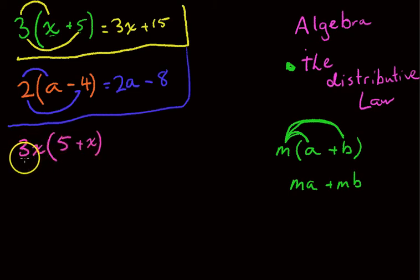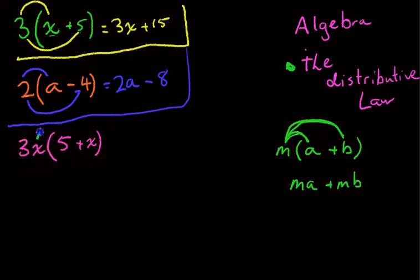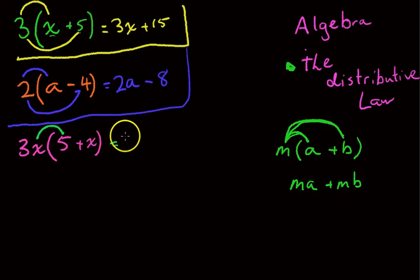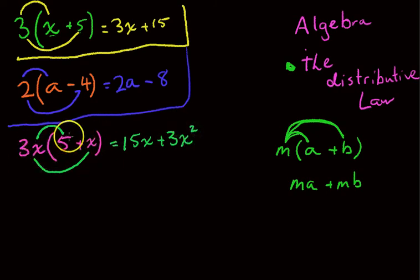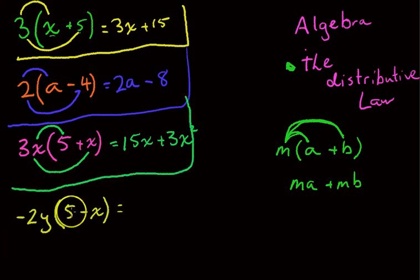Just making this one a little more complicated — we've got 3x out the front this time, so 3x times the bracket 5 plus x. Same rules: the first term times whatever the first one in the brackets is. So 3x times 5 will be 15x, and 3x times positive x will be 3x times x, which is x squared. Just make sure you're comfortable multiplying terms together and you shouldn't have too much trouble.